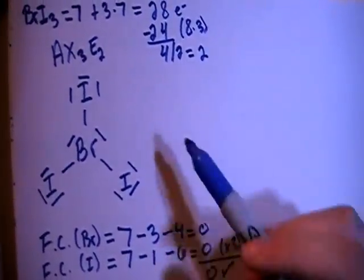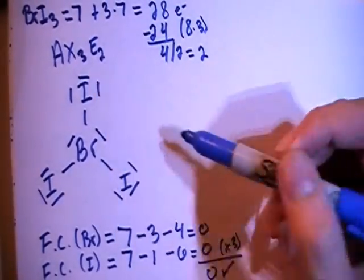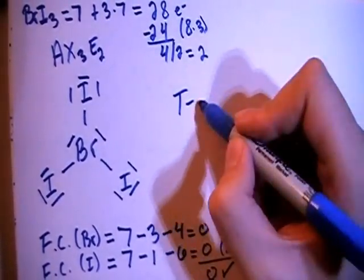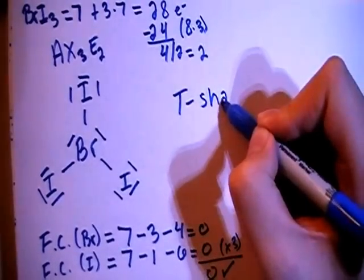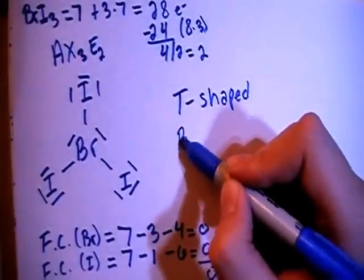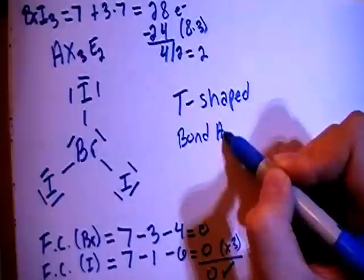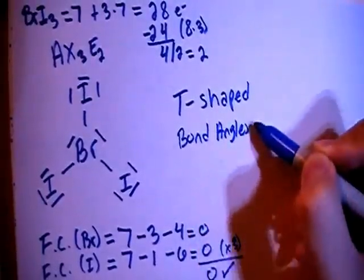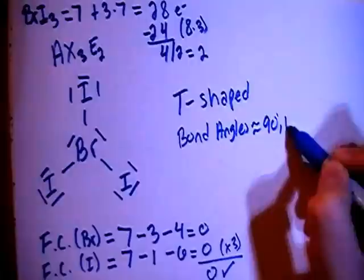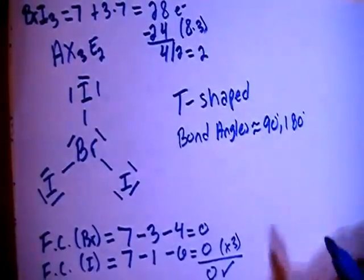Now in terms of shape, when you have the AX3E2 shape, that means the shape of this structure is going to be T-shaped. And when you have a T-shaped structure, that means that the bond angles are going to be approximately equal to 90 degrees, as well as 180 degrees in different parts of the structure.